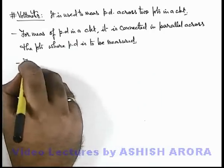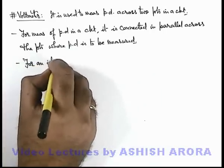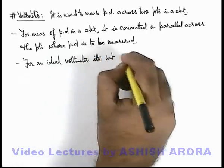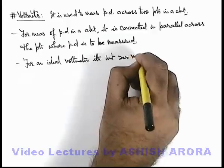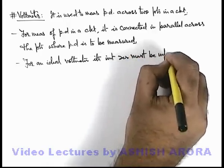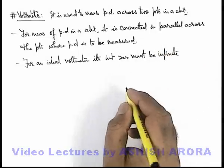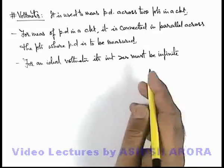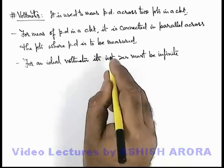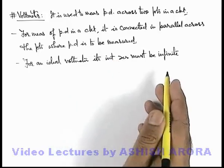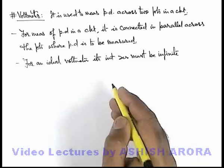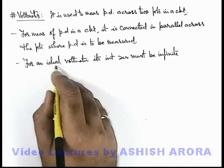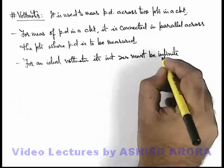We can also state that for an ideal voltmeter, since its connection is in parallel, its internal resistance must be infinite. Because whenever a device is connected in parallel, if its internal resistance is zero, the circuit will be short circuited and the whole current will pass through the device, so the potential difference cannot be measured. So a voltmeter will be ideal only if its resistance is infinite.